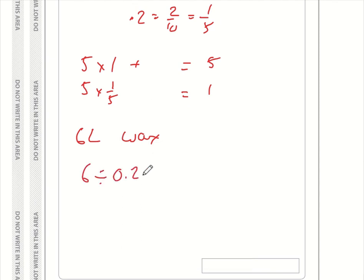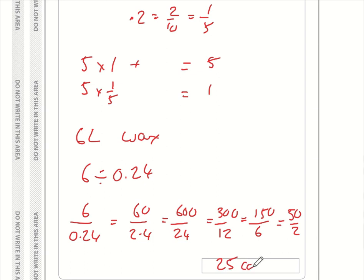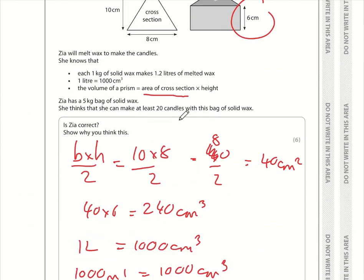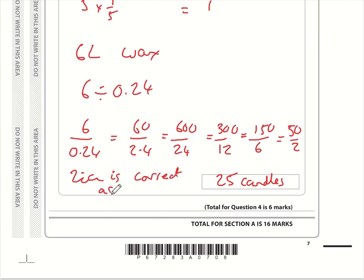How many 0.24 litres go into 6? That is 6 divided by 0.24. Let's turn it into fractions. 6 divided by 0.24 is the same as 60 divided by 2.4, which is the same as 600 divided by 24. That simplifies to 300 divided by 12, then 150 divided by 6, then 50 divided by 2, which is 25. So she can make 25 candles. Is Zia correct that she can make at least 20 candles? Yes, Zia is correct — she can make 25 candles.